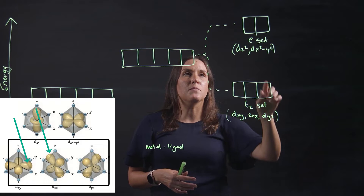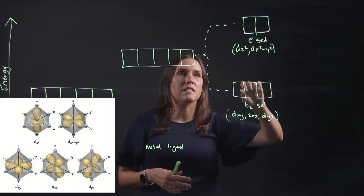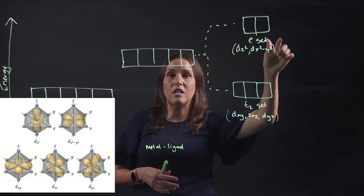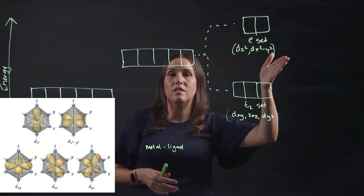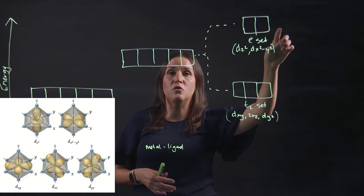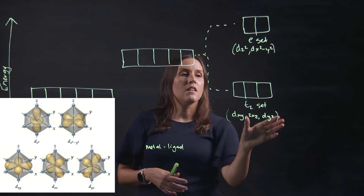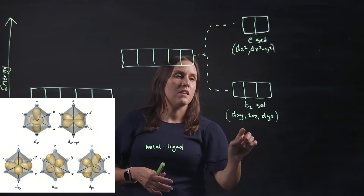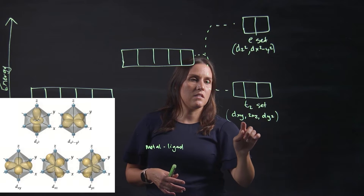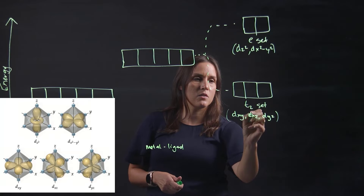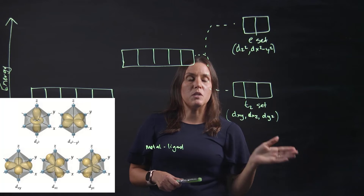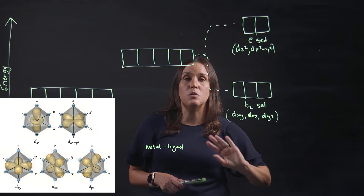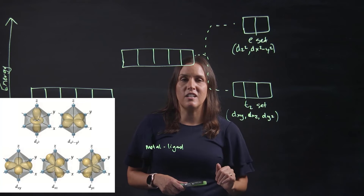So if we split that up: we've got the dz² and the dx²-y² — that's the E set — that's the one that in an octahedral complex points towards the ligands, so it's at a higher energy level because of the repulsion. The T2 set — that's the dxz, dxy, and dyz — points between the ligands, along those axes between, and it sits at a lower energy level.